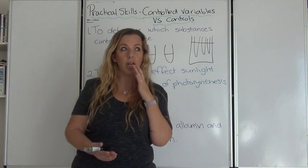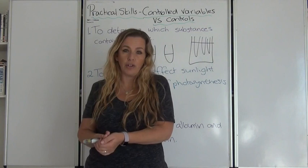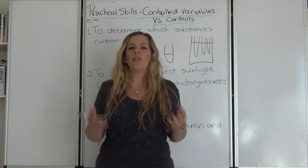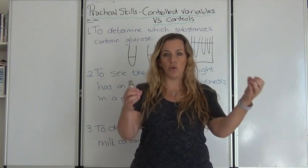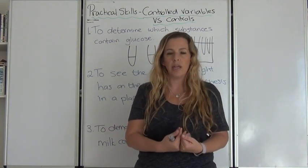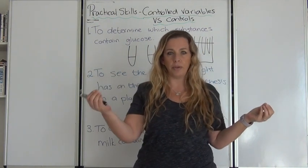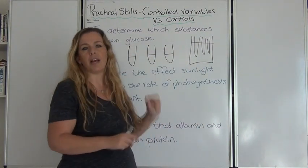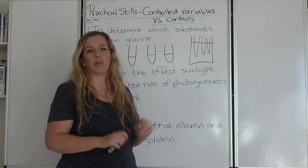A negative control would be water. Pure water we know does not contain glucose. So that would be your negative control. Why do you have this control? The control allows you to compare your results to what you know, so you can make comparisons and conclusions. If glucose turns bright red and water stays blue, then you can compare the apple juice, the lemon juice and the egg white.